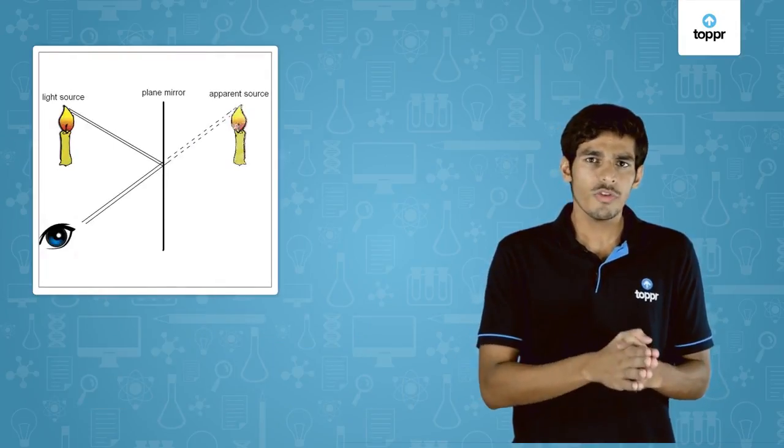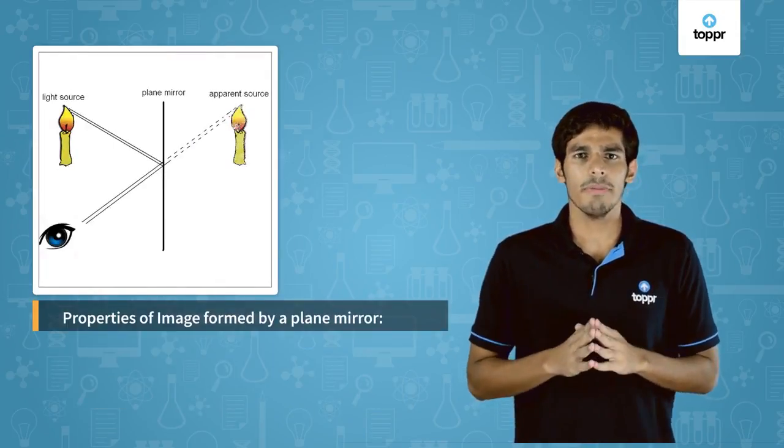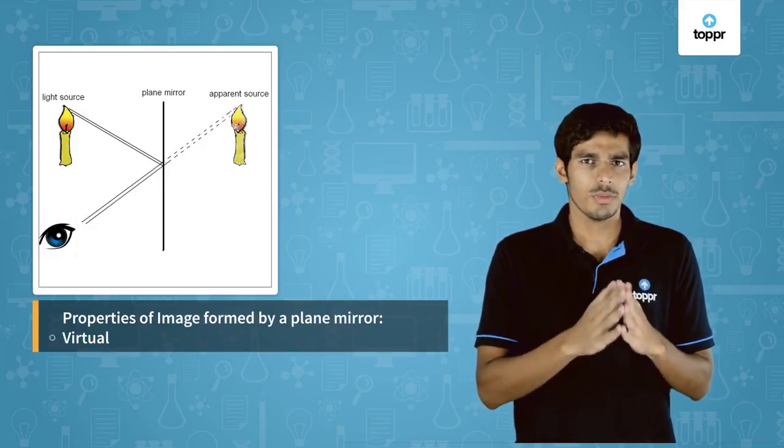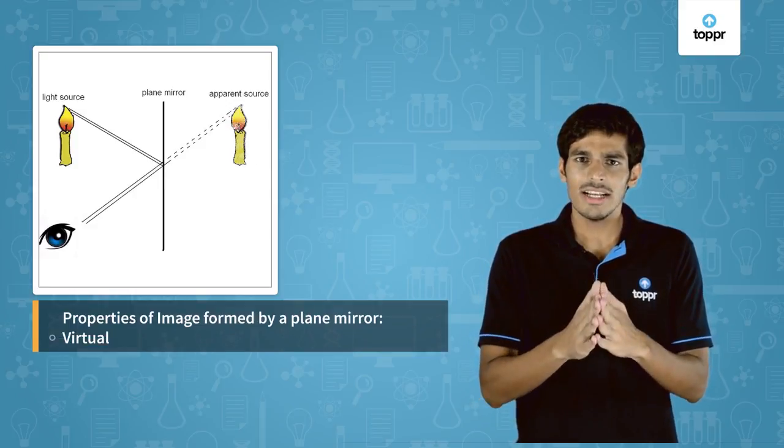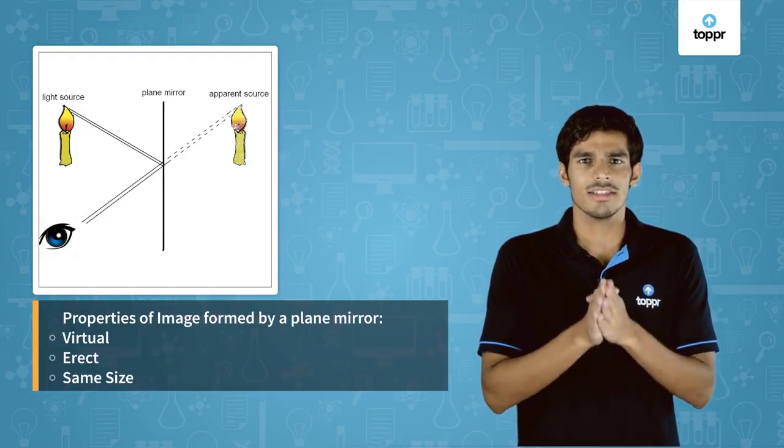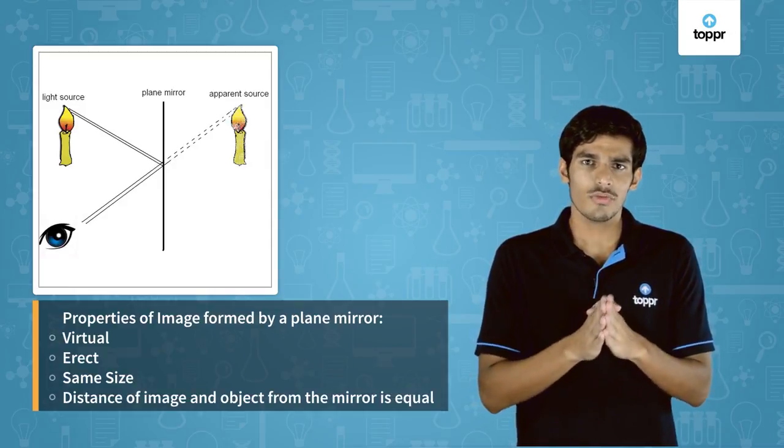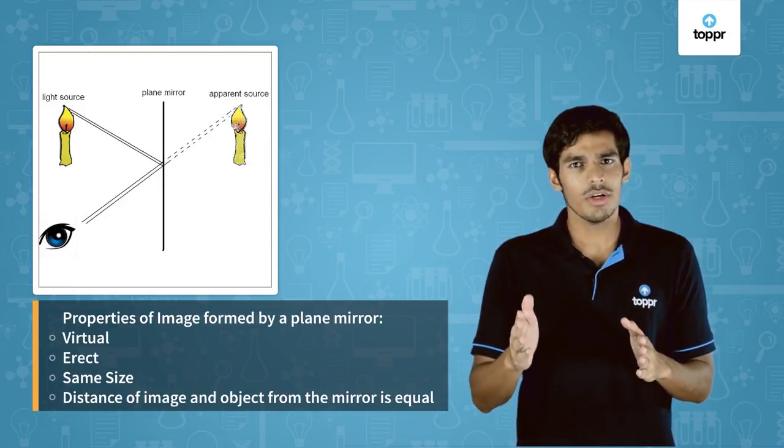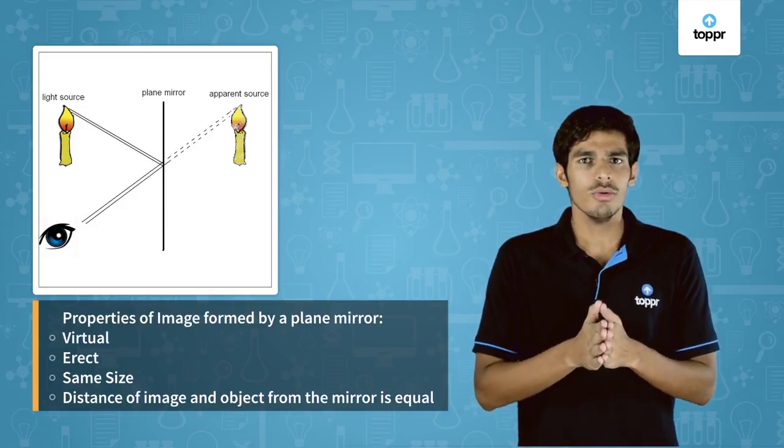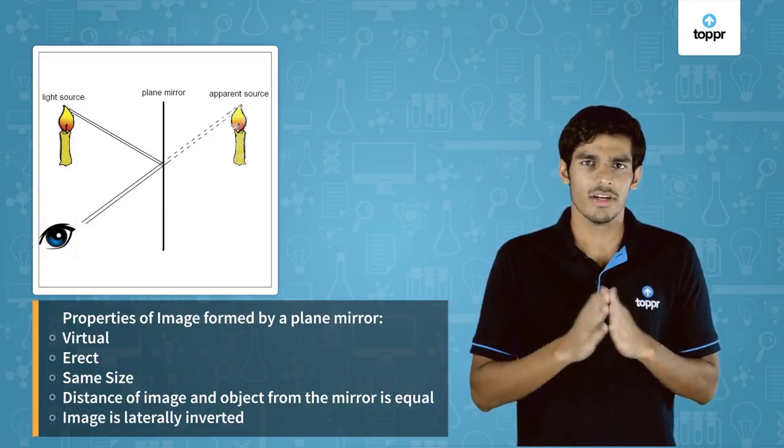We are also familiar with the properties of the image formed by a plane mirror. The image formed is virtual, that is the light rays don't actually meet at the point but only appear to meet. The image formed is erect, the size of the image is equal to the size of the object, the distance of the image from the mirror is equal to the distance of the object from the mirror. Also, the image is laterally inverted.